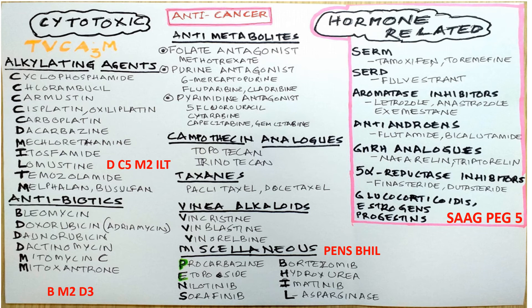Gemcitabine. Camptothecine analogues: topotecan, irinotecan. Taxanes: paclitaxel, docetaxel. Vinca alkaloids: vincristine, vinblastine, vinorelbine. Miscellaneous: procarbazine, etoposide, nilotinib, sorafenib, bortezomib, hydroxyurea, imatinib, L-asparaginase. Hormone-related — SERMs: tamoxifen, toremifene; SERD: fulvestrant; aromatase inhibitors: letrozole, anastrozole, exemestane; antiandrogens: flutamide, bicalutamide; GNRH analogues: nafarelin, triptorelin; 5-alpha reductase inhibitors: finasteride, dutasteride; glucocorticoids, estrogens, and progestins.